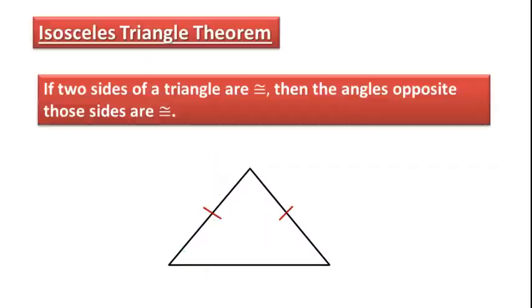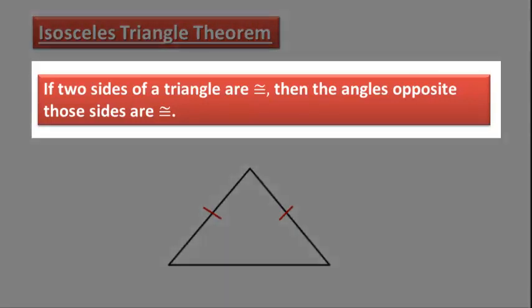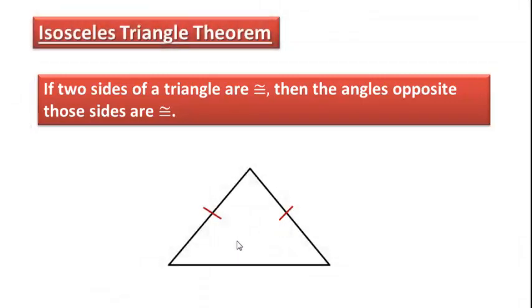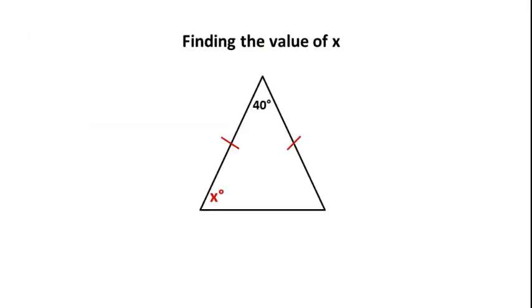And now let's look at the isosceles triangle theorem. It specifically says that if two sides of a triangle are congruent, so we can clearly see here that we have two sides that are congruent, well then the angles opposite those sides are congruent. So in an isosceles triangle, the legs will always be congruent, but these two base angles will always be congruent as well. We're going to use that to help us set up an equation.